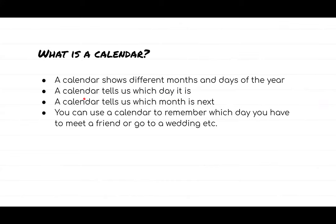A calendar tells us which day it is. You can look at a calendar and tell which day is today. You know the days of the week — Monday, Tuesday, Wednesday and so on — so you can tell which day it is in the week.